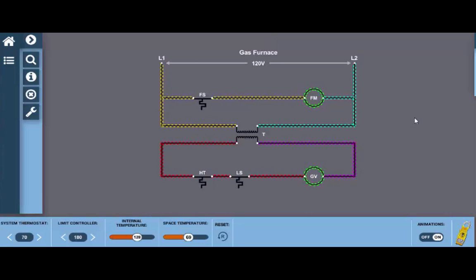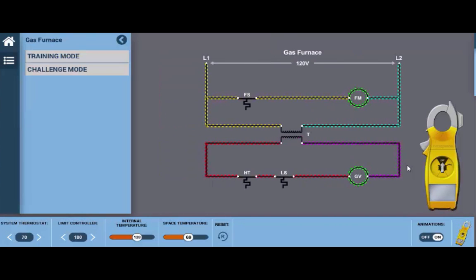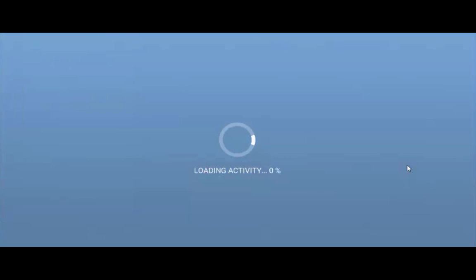Now don't forget once you feel you have a great understanding of the components and their function within the circuit as well as a pretty good idea of the sequence of operations you can use the meter down here to test various components. Now you can just test these on your own or what I would suggest is placing the diagram in what we call challenge mode. So if you click on this tab at the top left just below the home and click challenge mode